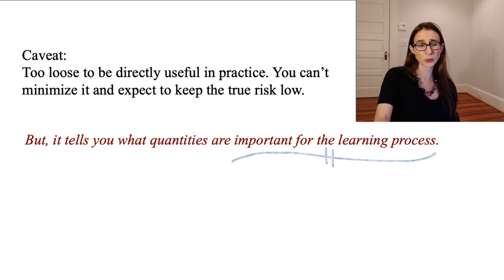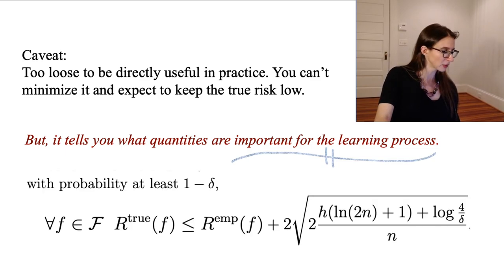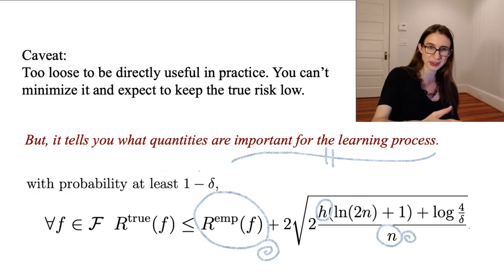And of course, what it's telling you is important are these three things, right? The empirical risk, the VC dimension, and the number of data points you have, right? You can keep the true risk small if your empirical risk is small, if the number of data points is large, and if you have a simpler function class where simplicity is measured by the VC dimension.